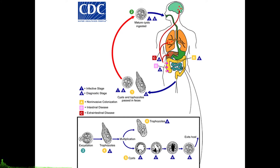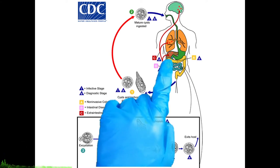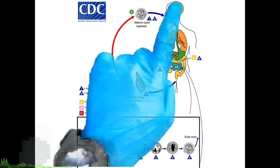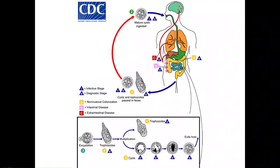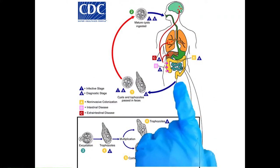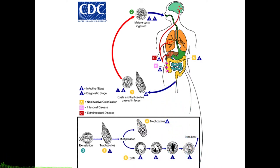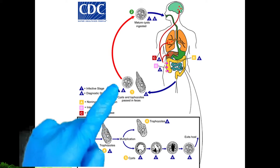What is problematic with Entamoeba histolytica is that its trophozoites can spread hematogenously via the portal circulation to the liver, or even to more distant organs such as the lungs or even the brain. Both trophozoites and cysts are passed out in diarrheic stools. Trophozoites die in the environment, but the cysts persist, ready to infect another host.